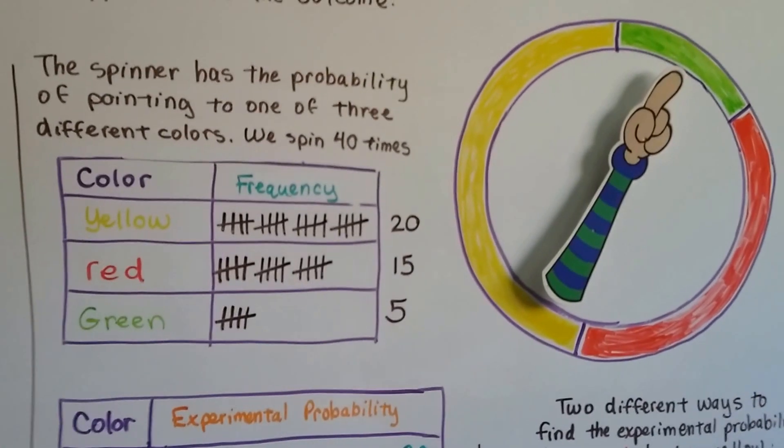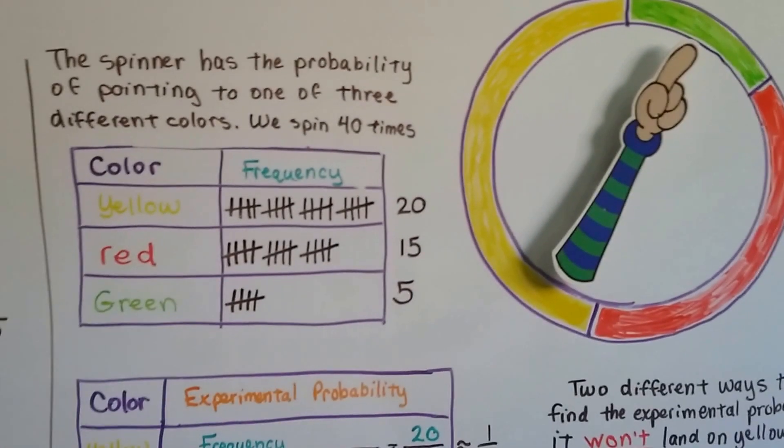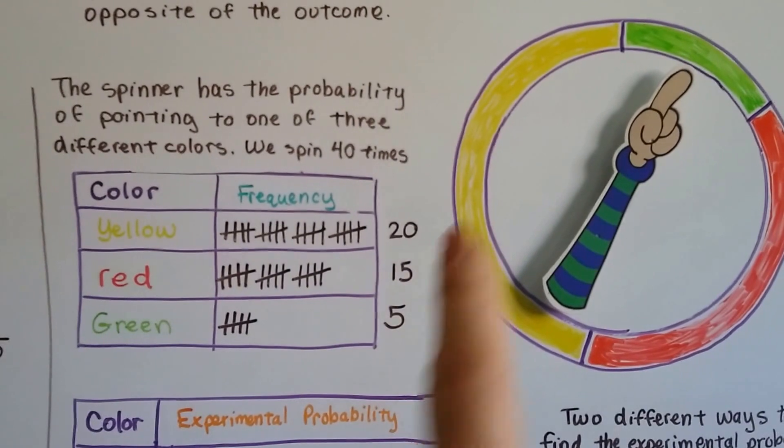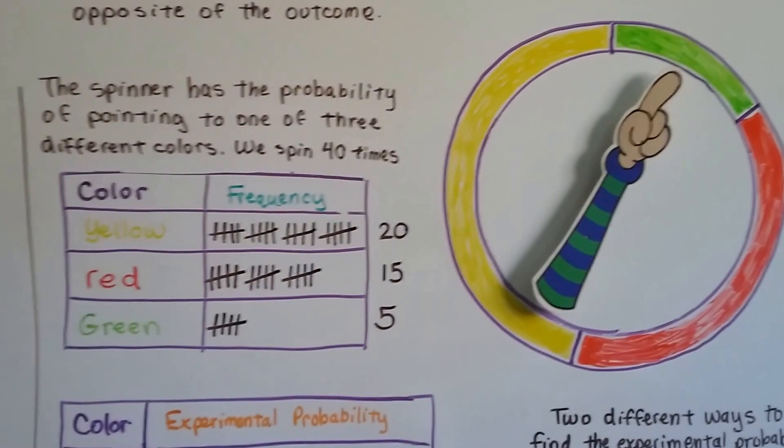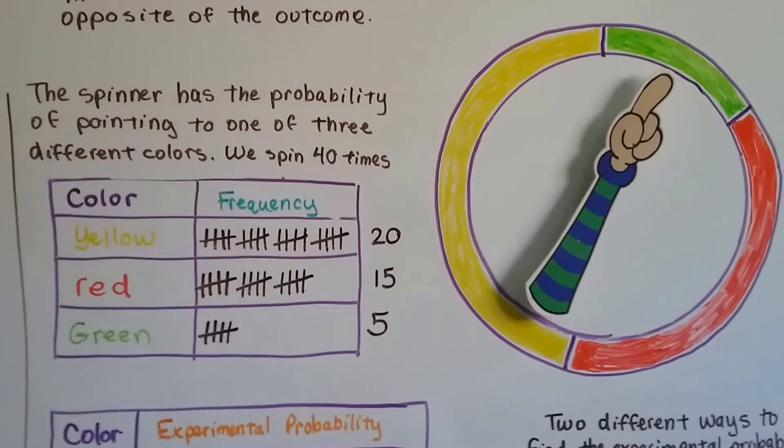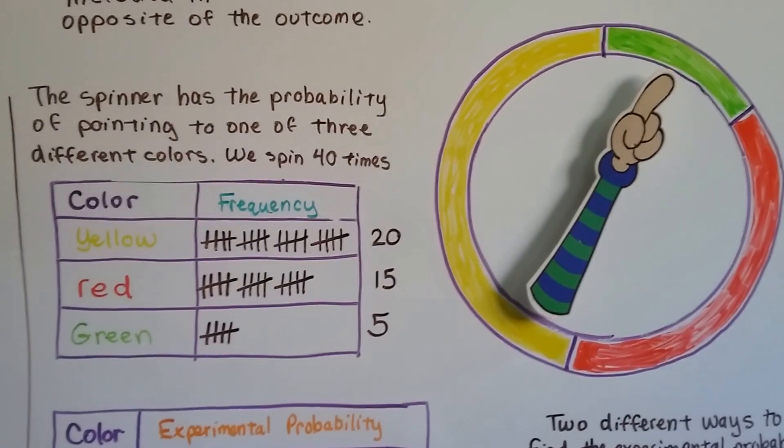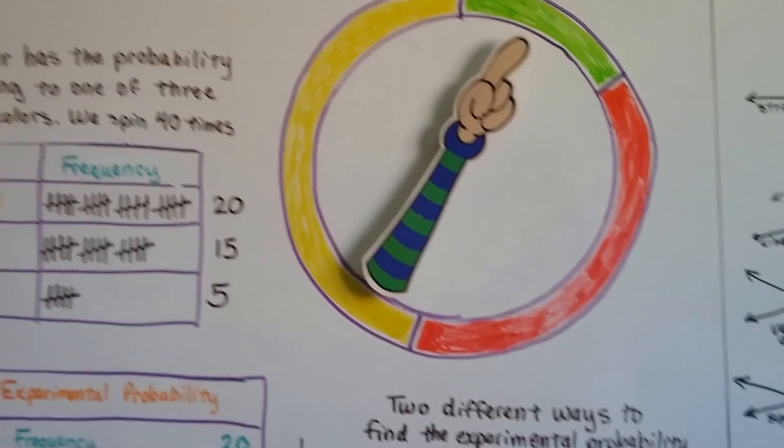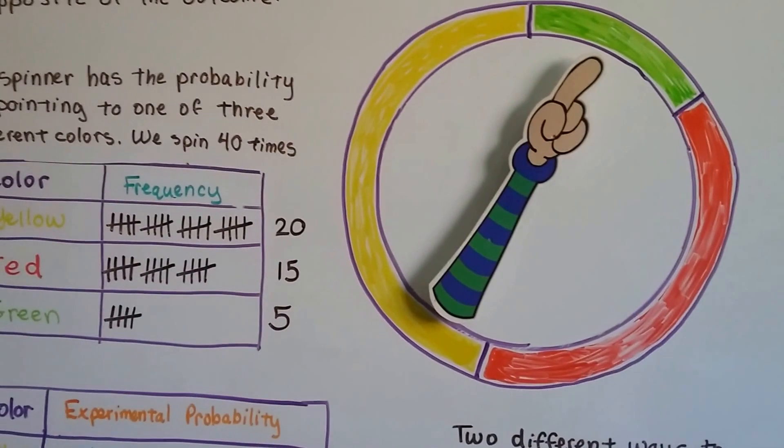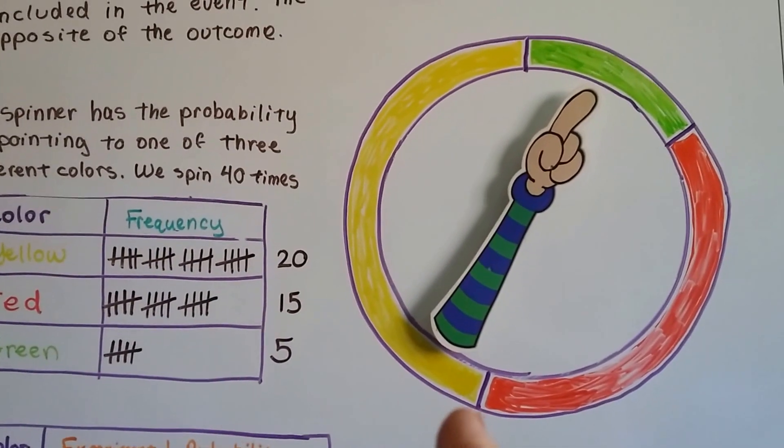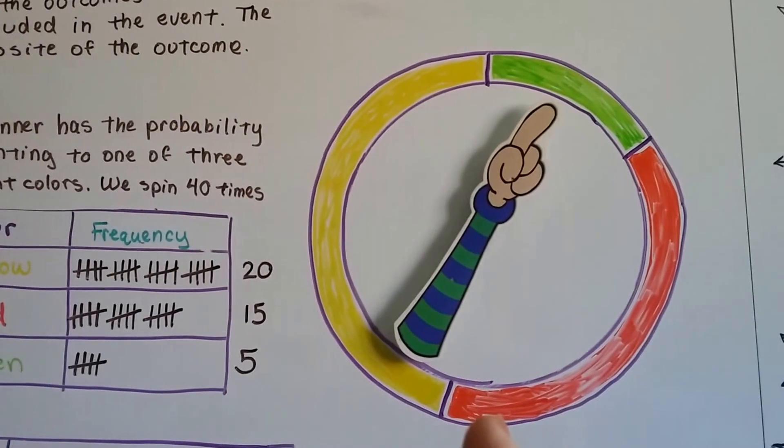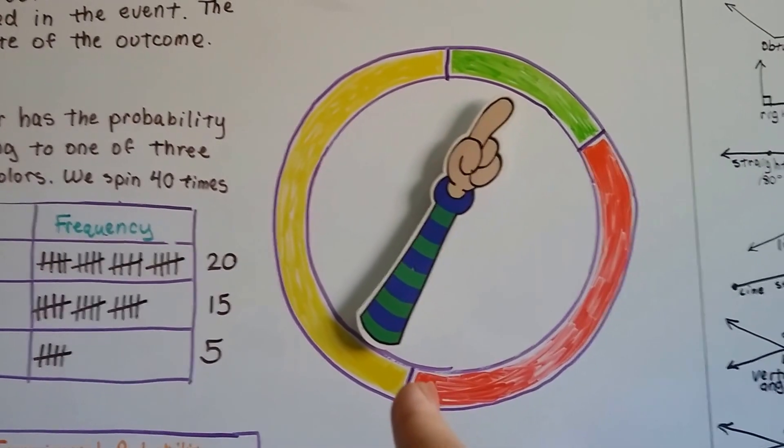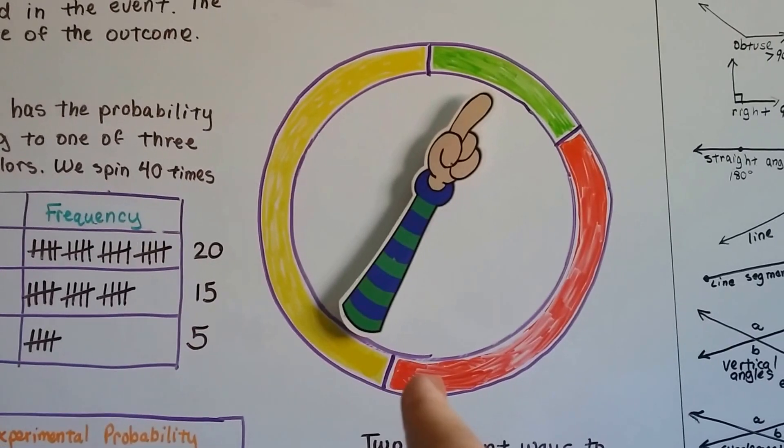So I got my trusty spinner here, if you remember this from last year, from 6th grade. And the spinner has a probability of pointing to one of three different colors. And I spun it 40 times. Yes, as I was drawing this board, I spun that 40 times. And if you look, yellow is not quite half, is it? It's almost half, but it's not quite half. If this was the 50% mark, that would be like 46 or something, right? It's not quite.